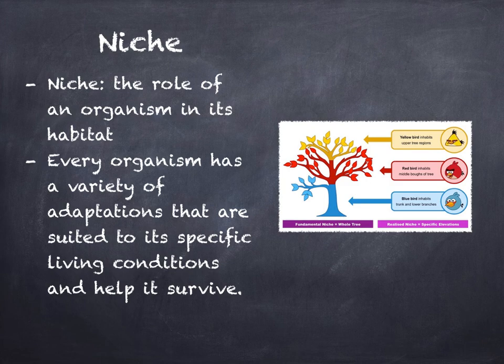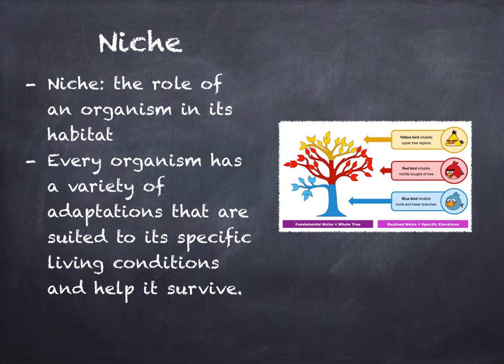Niche: The organisms in the Saguaro community have adaptations that result in specific roles. The role of an organism in its habitat is called its niche. A niche includes what type of food the organism eats, how it obtains the food, and what organisms eat it. A niche also includes when and how the organism reproduces and the physical conditions it requires to survive. Every organism has a variety of adaptations that are suited to its specific living conditions and help it survive.